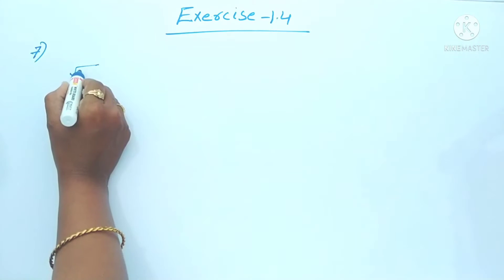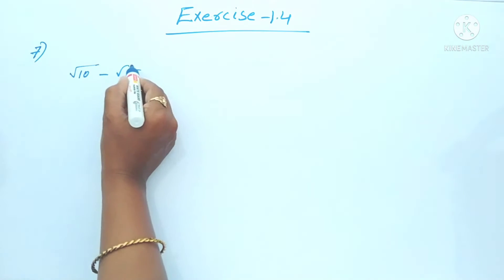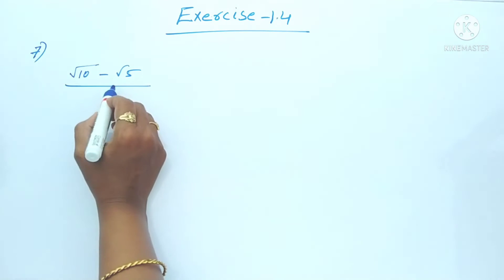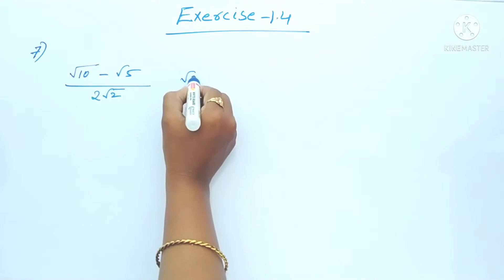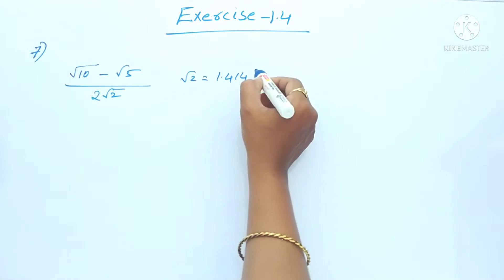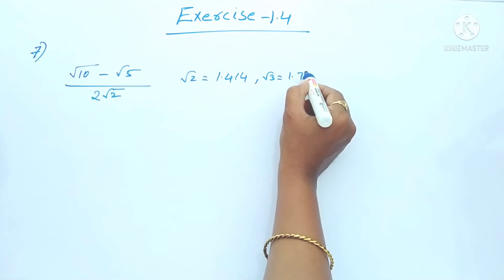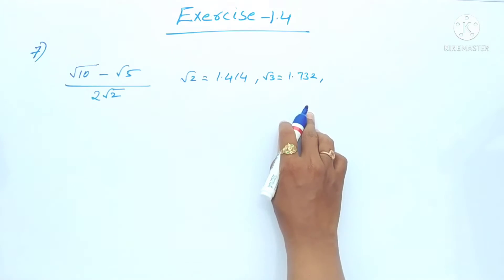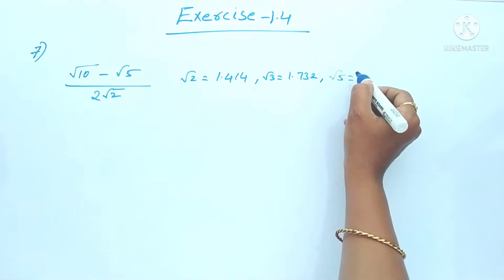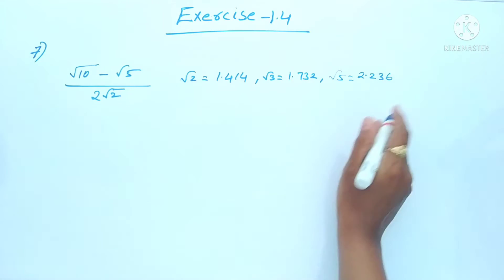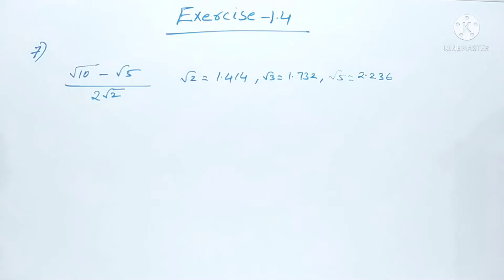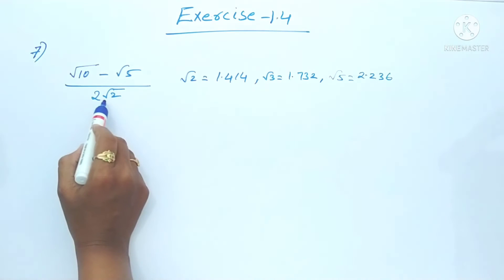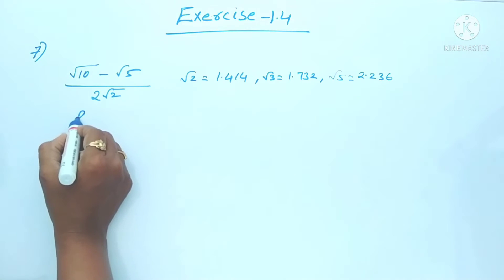So here we have (√7 - √5) / (2√2). The given values are: √2 = 1.414, √3 = 1.732 — these we have already calculated by the long division method. And √5 = 2.236. We have to calculate this value up to 3 decimal places.